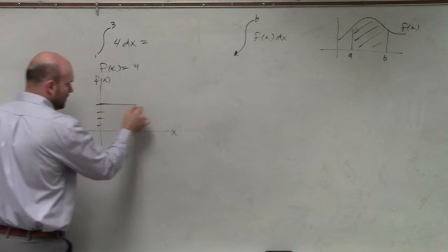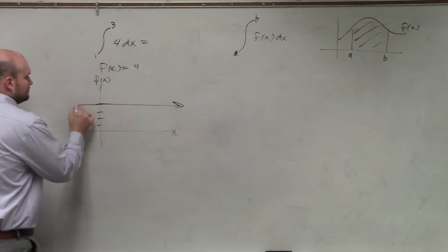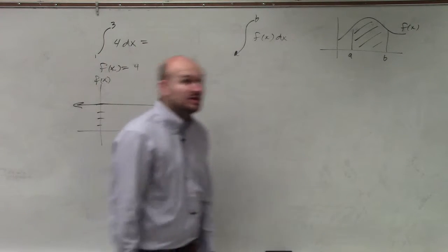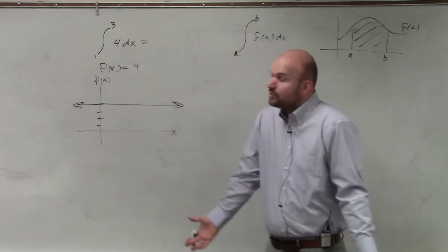1, 2, 3, 4. That is my function f of x, which is just 4, which is a horizontal line.